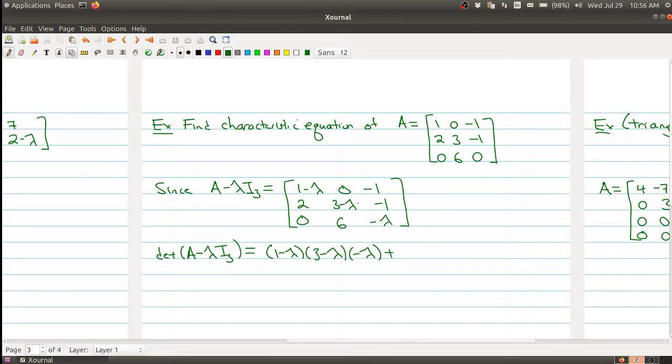Then I'm going to do the second diagonal, but that would be 0 minus 1 times 0. So that's 0. And then I would do my last diagonal, which would be minus 1 times 2 times 6. So I would get minus 12 there.